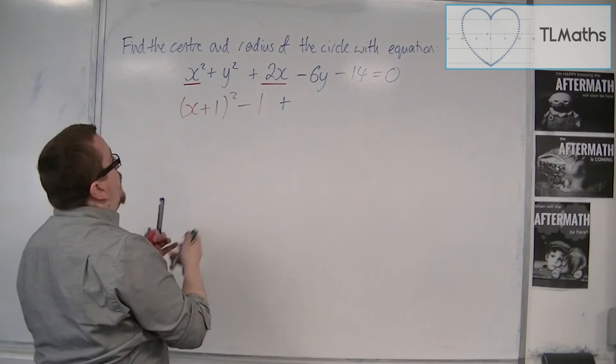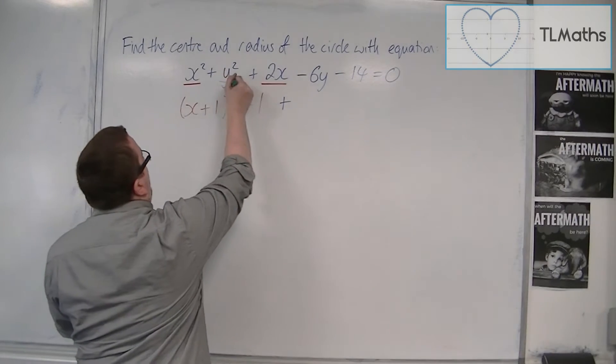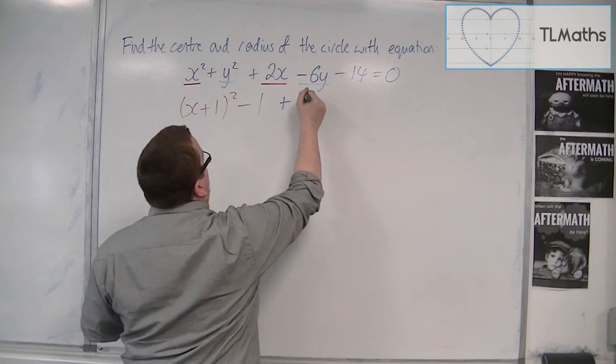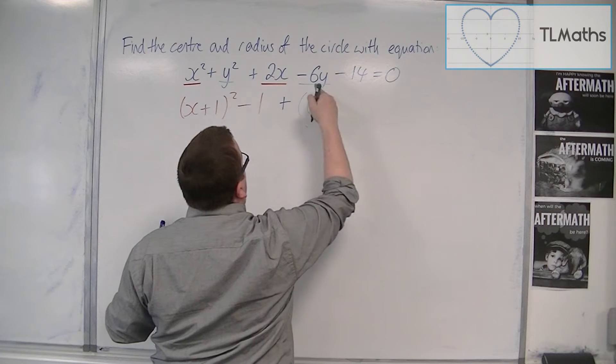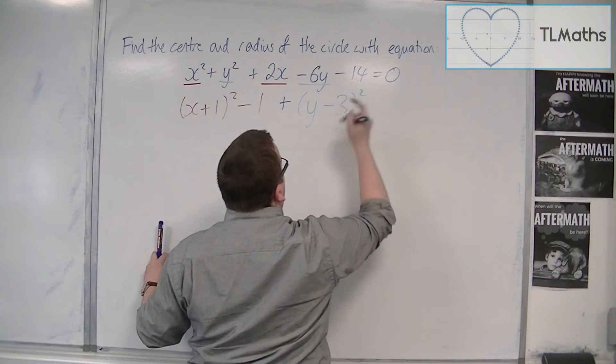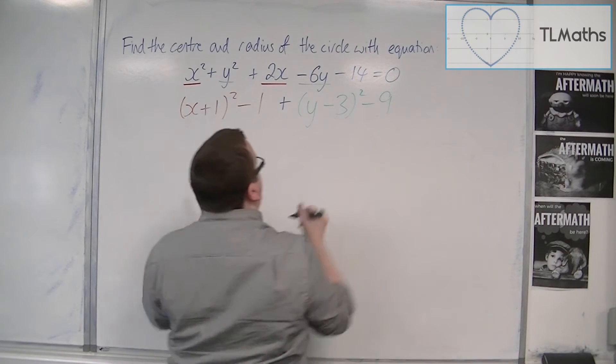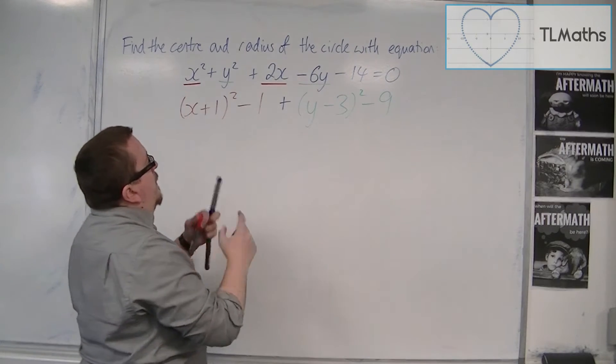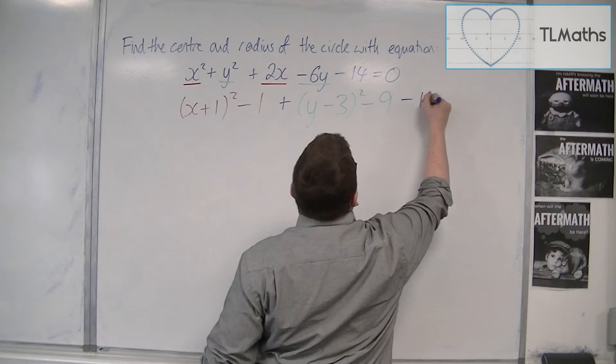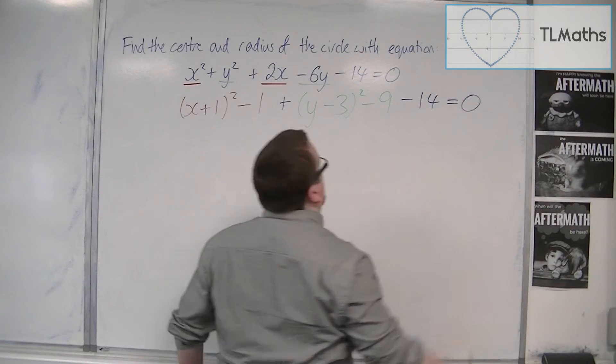Plus, then I want to focus in on the y's. So we've got y squared and minus 6y. So we're going to have y minus half the 6, so 3, squared. Take away the square of that, so take away 9. We've also got that take away 14 on the outside, and it's all equal to 0.